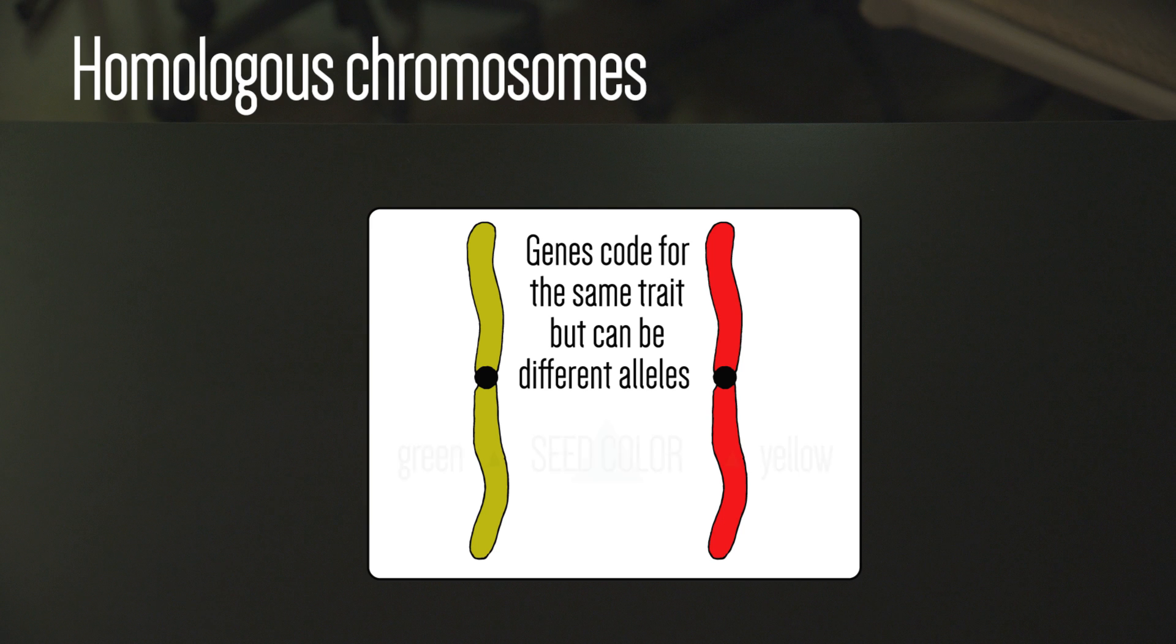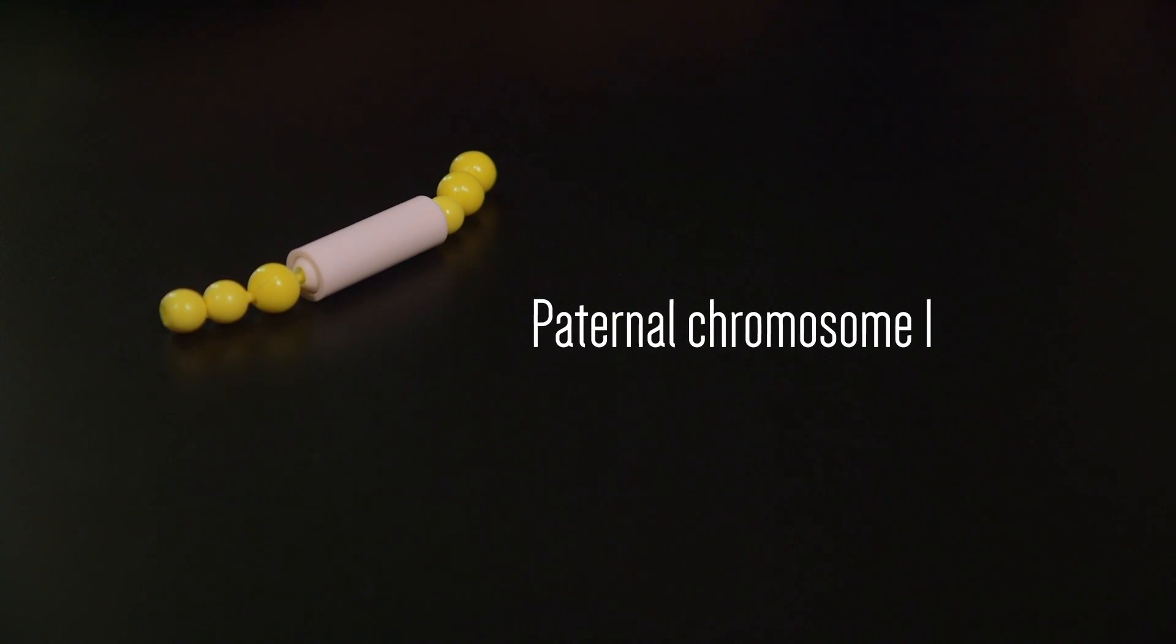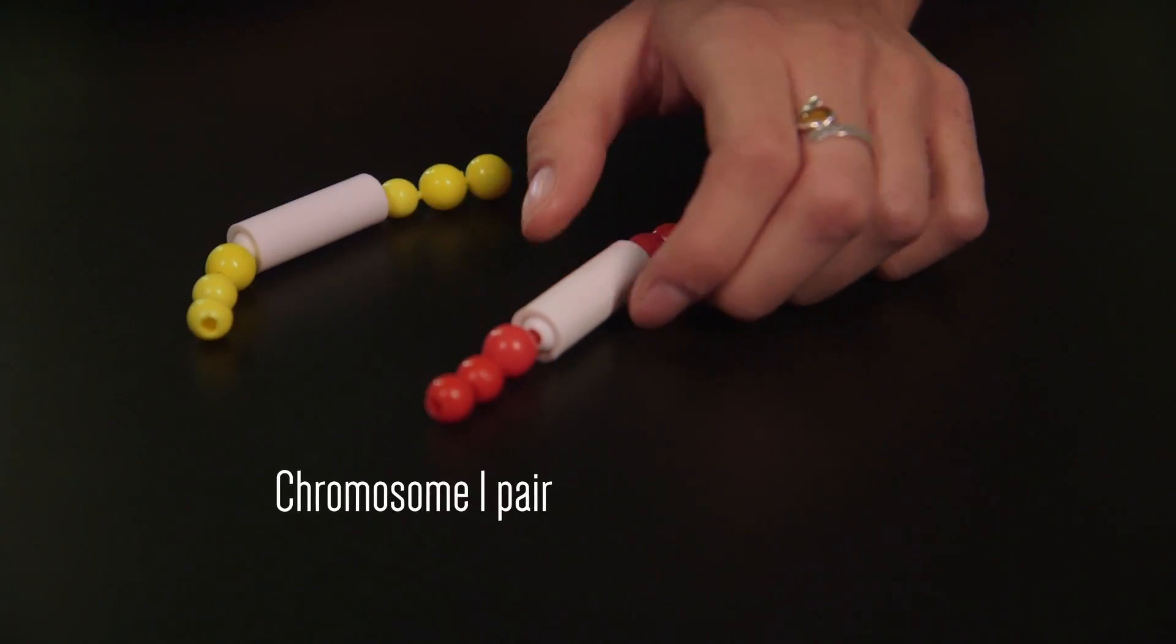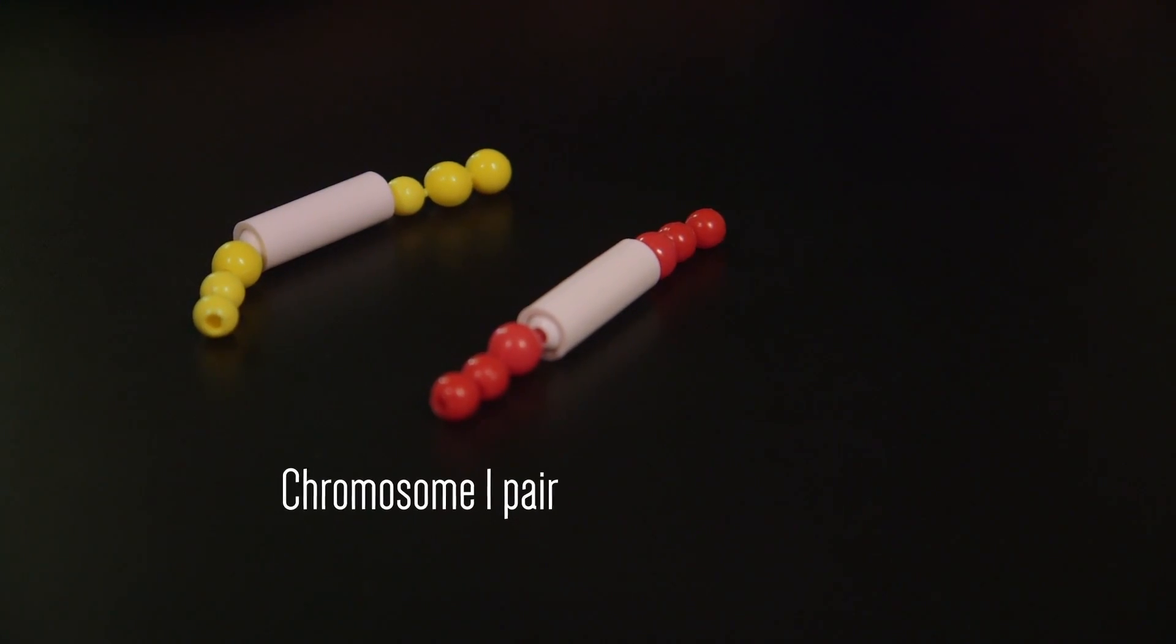For example, the gene for seed color could have two versions, green or yellow. We will use yellow beads for chromosomes from the paternal parent. So how would you make a paternal chromosome 1? It would look the same as maternal chromosome 1, except the beads would be yellow. The red and yellow chromosomes that are identical, except color, represent a homologous chromosome pair.